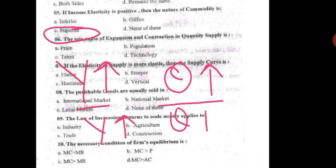The next question is: if income elasticity is positive, the nature of the commodity is — superior, Giffen, inferior, or none of these. Positive income elasticity means if income increases, quantity demanded also increases. This is only the case for superior or luxury goods. In contrast, Giffen and inferior goods have negative income elasticity — if income increases, quantity demanded decreases. So the correct option is C — superior goods.